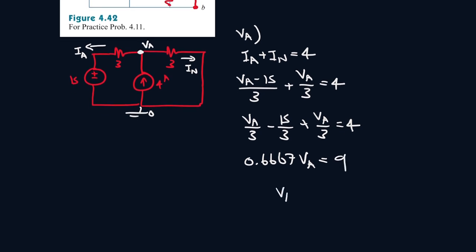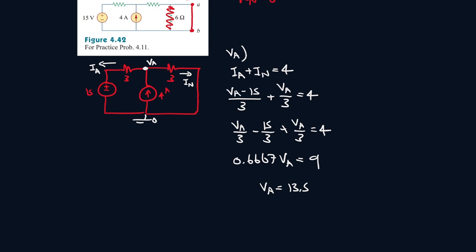So VA will be equal to 13.5. So IN is equal to 13.5 over 3. Remember this formula.